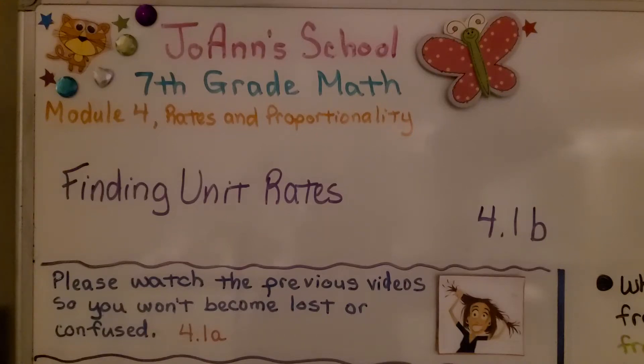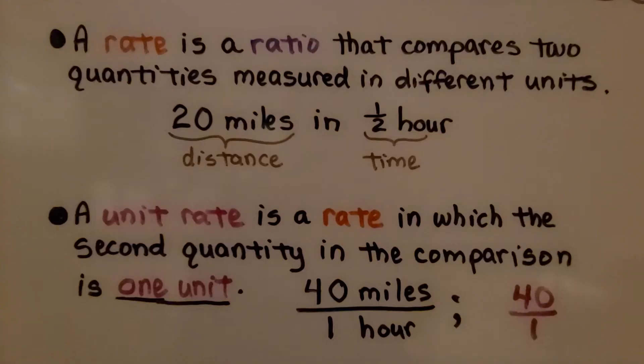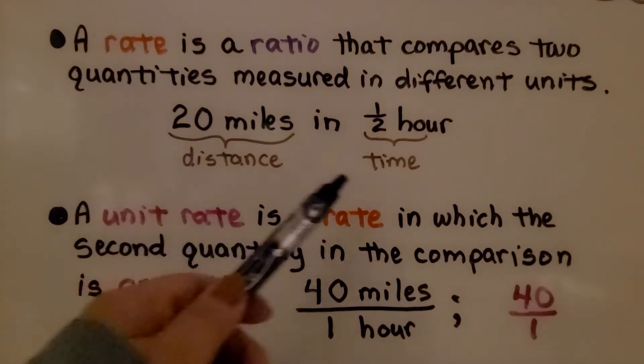We're at lesson 4.1b and we're going to talk about finding unit rates. A rate is a ratio that compares two quantities measured in different units. We have a rate of 20 miles in half hour. We're comparing distance and time.